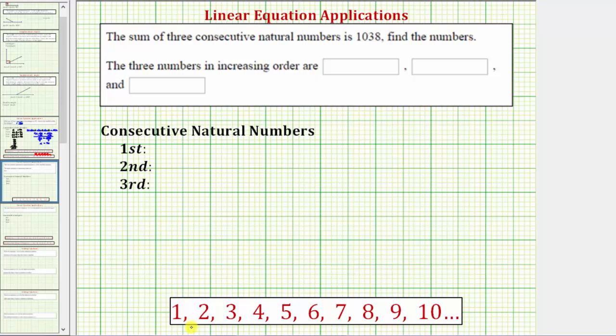Notice how the consecutive natural numbers increase by one from left to right. One plus one is two, two plus one is three, three plus one is four, and so on.